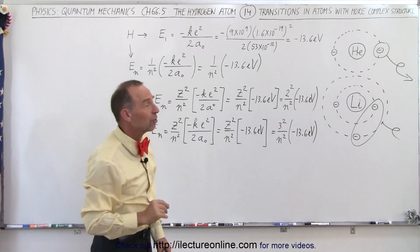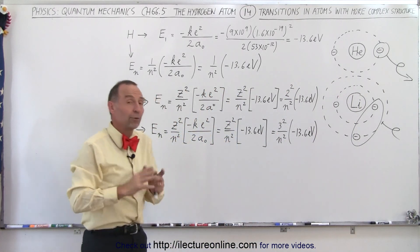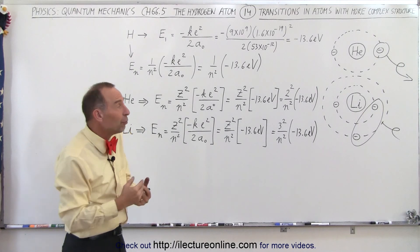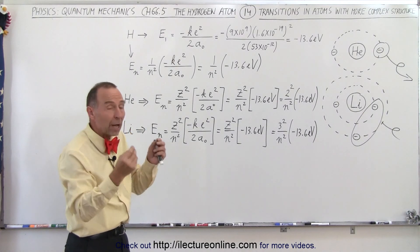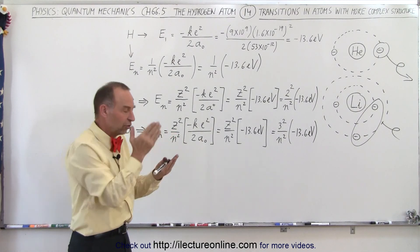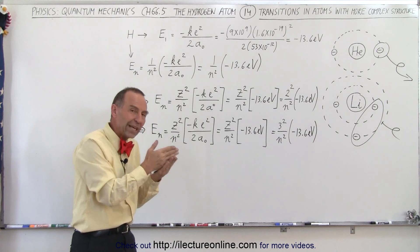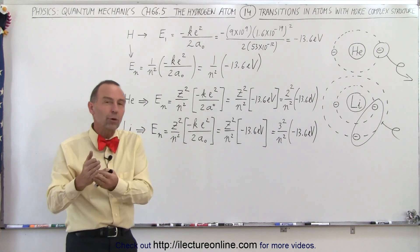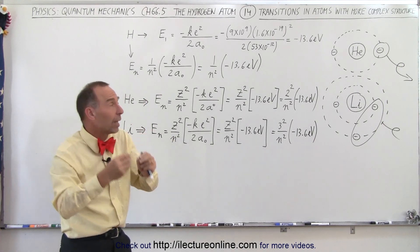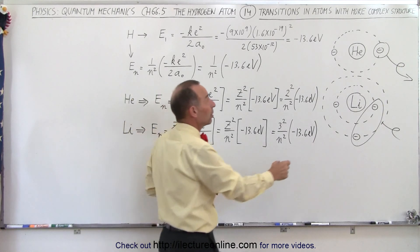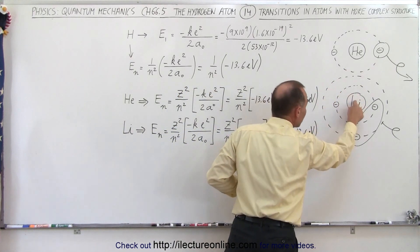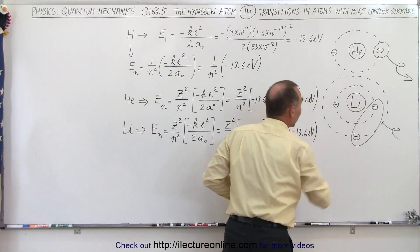So how does that affect the equations? The equations work exactly the same as before, because we again have the interaction of only two particles. The centripetal force equals the Coulomb force. The difference is that the Coulomb force will now be stronger, because we have two protons instead of one, or three protons instead of one.